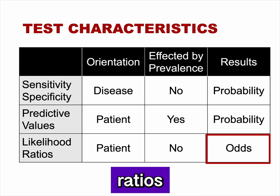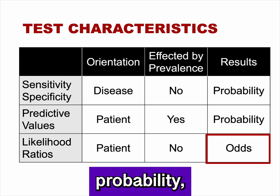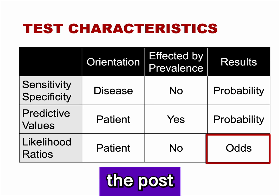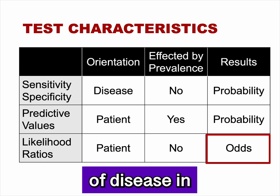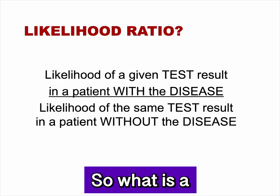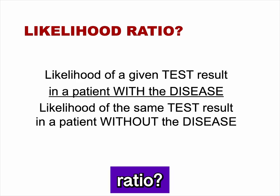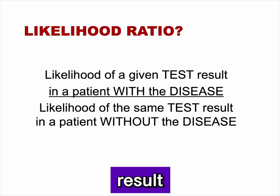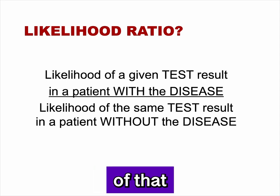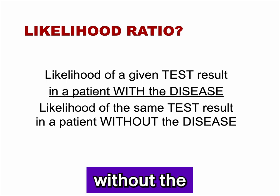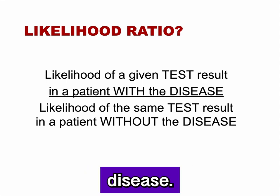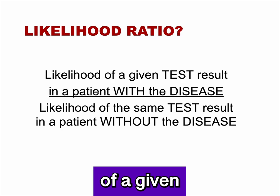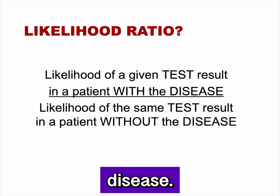So what is a likelihood ratio? A likelihood ratio is the likelihood of a given test result in patients with the disease divided by the likelihood of that same test result in patients without the disease — in other words, the likelihood of a given test result in those with disease compared to those without disease.